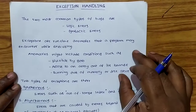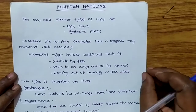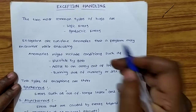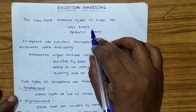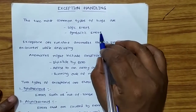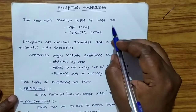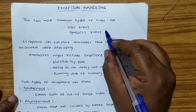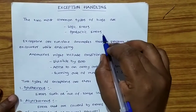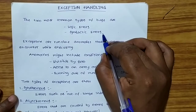Generally, while we are compiling a program or running a program, we may get two types of common bugs. The first one is logic errors and the second one is syntactic errors. Logic errors occur due to poor understanding of the problem and the solution procedure to that particular problem. Syntactic errors occur due to poor understanding of the language itself.